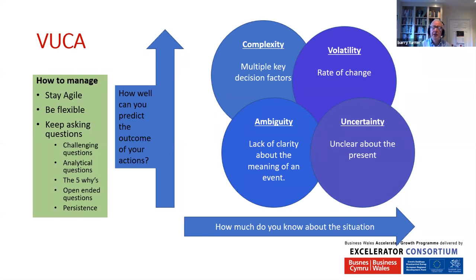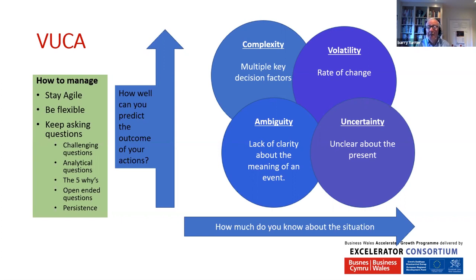Ambiguity is the lack of clarity about the meaning of an event. If you think back to late December and January this year, when first news was coming out of Wuhan about this mystery virus — very few of us expected to be experiencing what we've gone through this year. Ambiguity is about that lack of clarity; none of us really understood the meaning of what was happening.